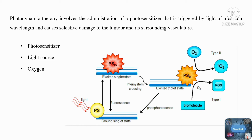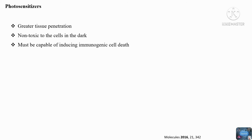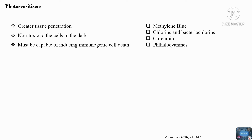Photosensitizers are the major component in photodynamic therapy. Light with a wavelength in the therapeutic window of 600 to 700 nanometers should be used to excite the photosensitizer, since it has greater capability for tissue penetration. It must not be toxic to cells in the dark — that is, it must not kill cells in the absence of light. The target cells must specifically capture and retain it, and it must be capable of inducing immunogenic cell death, which aids in establishing a specialized immune response to malignant tumors. Some conventional photosensitizers used in photodynamic therapy are methylene blue, chlorines and bacteriochlorines, curcumin, and phthalocyanines.